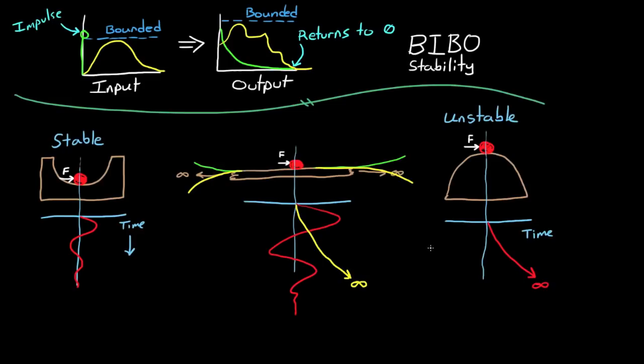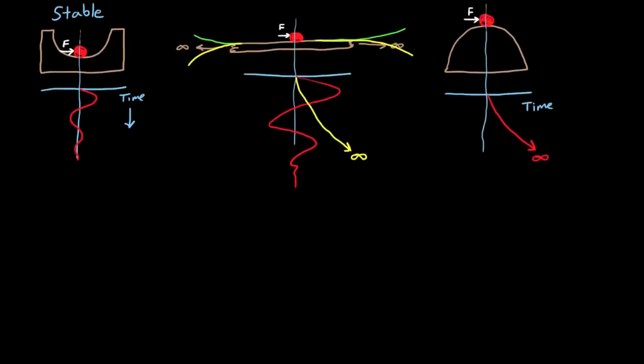We'll get back to this idea of a point between stable and unstable systems later on in this video. For now, let's take a second example which I think is a little bit more practical than just a ball sitting at the bottom of a valley.